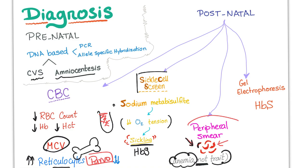Huge difference. Sickle cell anemia, hemoglobin SS — there are sickle cells under the microscope. Sickle cell trait, hemoglobin AS — the carrier — they have no sickle cells; the red blood cells are normal. It's a trait, not a disease. It's a carrier state. Many students confuse this point.